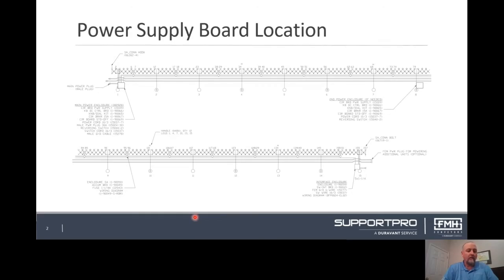Let's start with an overview of the unit. As you can see on this slide, the top section of the conveyor is the end feed end with our product flow from left to right. The power supply enclosure is located at the end feed end of the unit.